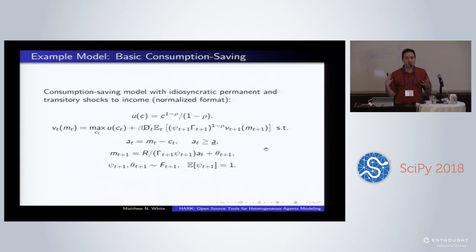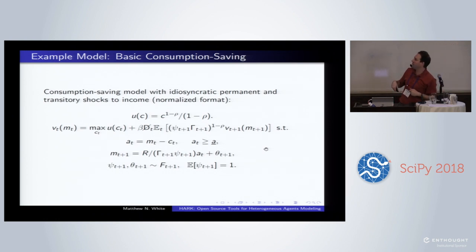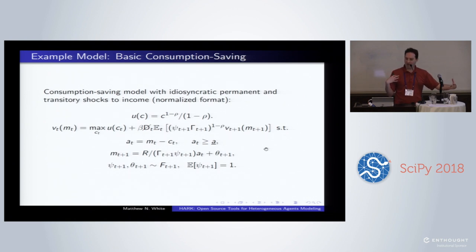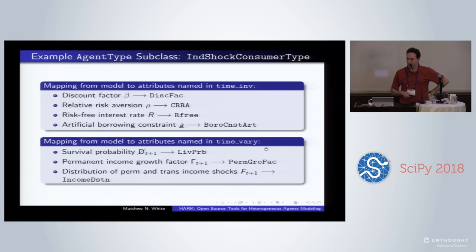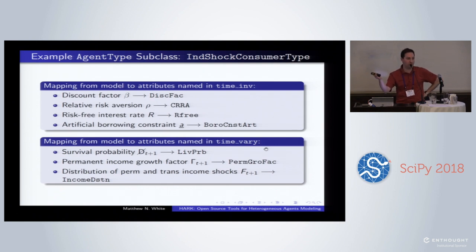Consider a basic consumption-saving problem that actually does have some risk. For the economists in the room, we've got a consumption-saving model with constant relative risk aversion utility, a constant interest factor, geometric discounting at constant rate beta, a hard borrowing constraint on your singular asset, and permanent and transitory shocks to income. This is all written in normalized format, so all variables have been divided by permanent income. We can map this from the math of the model to its representation in HARK: the IndShockConsumerType is the type of agent who has this problem, and instances of this class fill in specific values of those attributes.